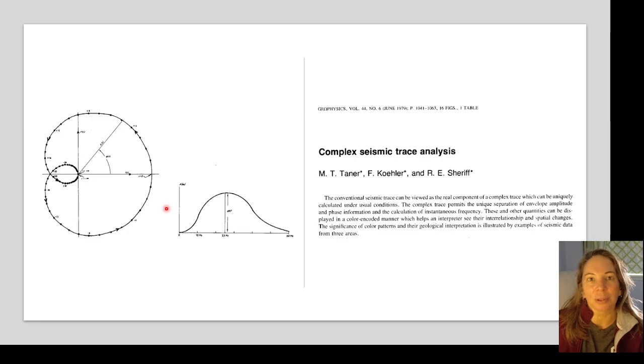There's a lot of information, so a lot of this came from Tanner et al.'s 1979 paper, which really established the foundational mathematics for deriving these instantaneous attributes from the complex trace to the envelope, the phase and instantaneous frequency. All of those are extracted in a similar way, and so we're going to start with looking at some of those other attributes.